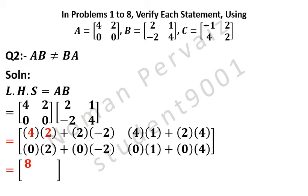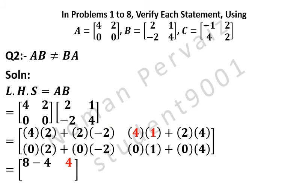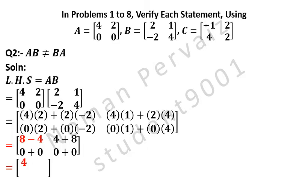Is equal to: 4×2 = 8, plus minus is minus, 2×2 = 4; 4×1 = 4, plus, 2×4 = 8; 0×2 = 0, plus, 0×(minus 2) = 0; 0×1 = 0, plus, 0×4 = 0. Is equal to: 8 minus 4 is 4, 4 plus 8 is 12, 0 plus 0 is 0, 0 plus 0 is 0. We call this equation number 1.